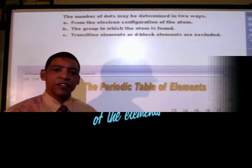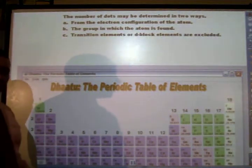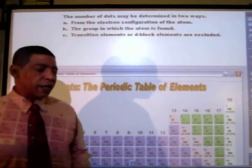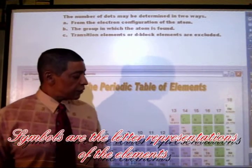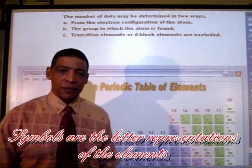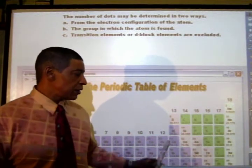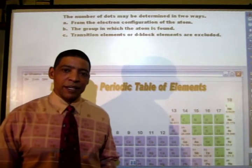The symbol of the element may be found on the periodic table. For example, the symbol for the element carbon is simply C. The symbol for the element oxygen will be O. So when writing your dot symbol, simply use the symbols found on the periodic table.